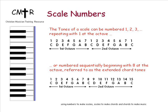In extended harmony, the two becomes the nine, and the four becomes the eleven, and the six becomes the thirteenth. In special cases, when you play the one with the three above the octave, it is called a tenth, and that's mainly used in left-hand bass accompaniment.